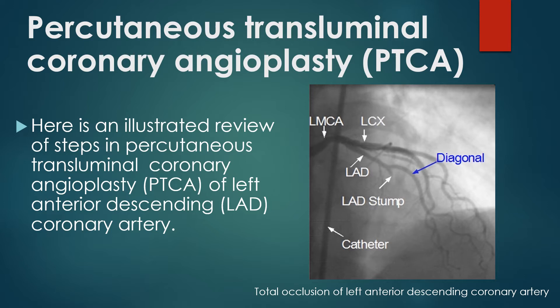This is the coronary angiogram showing total occlusion of the left anterior descending coronary artery. LMC is the left main coronary artery. LCX is the left circumflex coronary artery, and LAD is short for left anterior descending coronary artery. The LAD stump is seen after the diagonal branch.